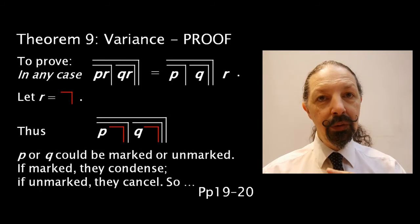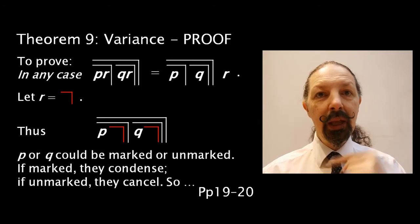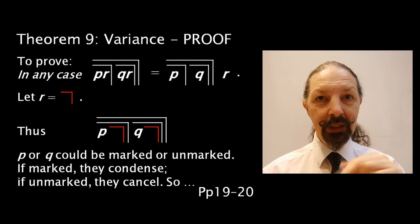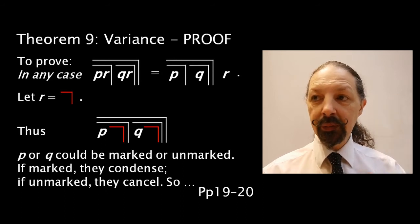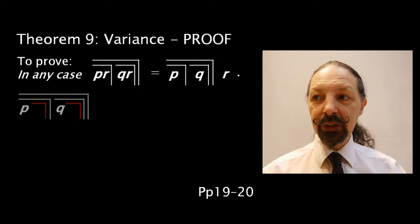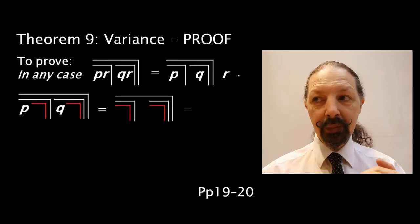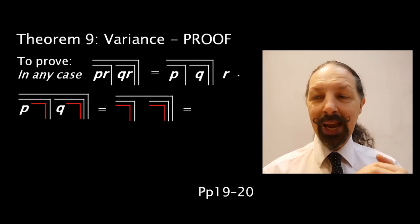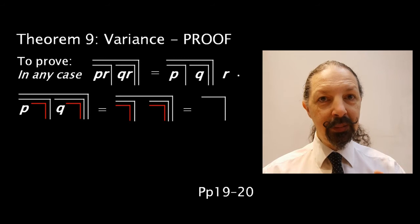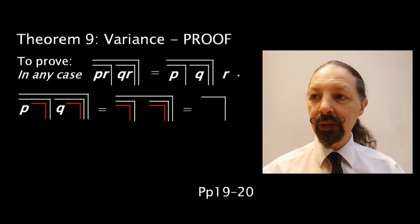Now, p or q could be marked or unmarked. If they're marked, they condense. If unmarked, they just disappear. So, that reduces to this. We cancel both the sets of nested marks, and we're left with a mark, a single mark.